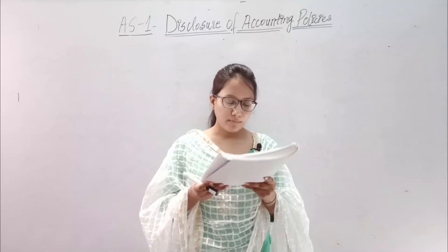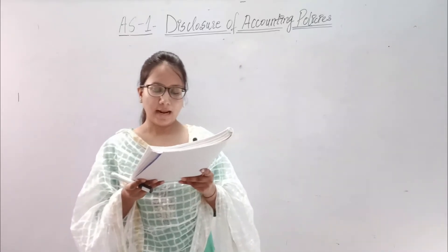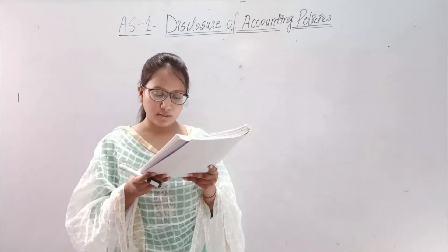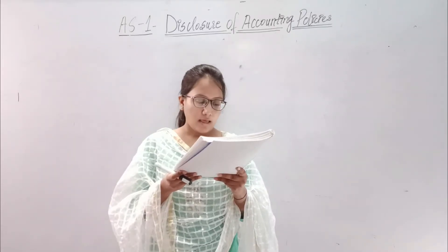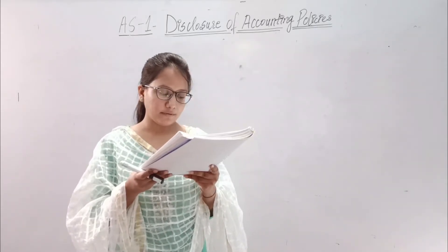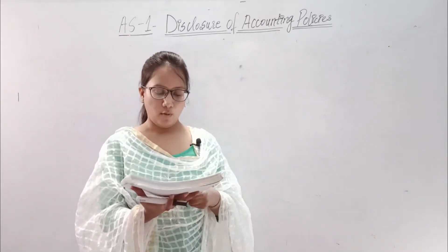Let's look at question number 4. Jagannath Limited had made a right issue of shares in 2012. In the offer document to its members, it had projected a surplus of 40 crores during the accounting year ended on 31st March 2014. The draft results for the year, prepared following accounting policies and presented for perusal of the Board of Directors, showed a deficit of 10 crores. The board in consultation with the Managing Director decided on the following.